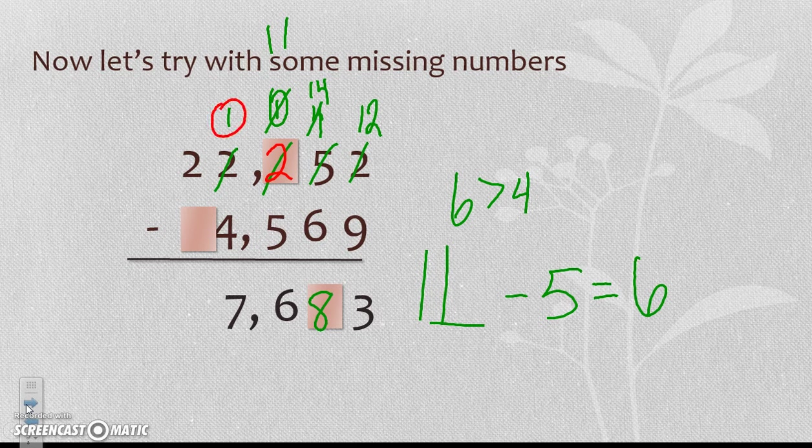Now I know I cannot take 4 from 1, so I have to regroup this 1. The 2 becomes a 1, the 1 becomes an 11. 4 from 11 is equal to 7. And then I have nothing in my ten thousands place. So I know that 1 minus 1 would have gotten me 0, but I don't need any leading 0s, so there was no 0 there.